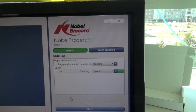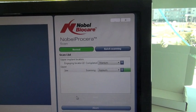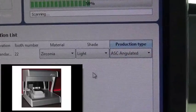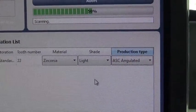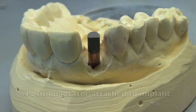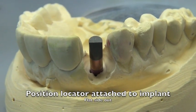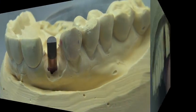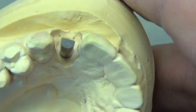So we went to the Nobel Procera software and we were able to pick the new ASC angulated abutment, standing for angulated screw channel. So during this procedure, what you'll do is take a position locator, place it on the implant without the soft tissue model there, and then we'll start the scanning process.